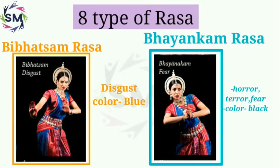The fifth is Vibhatsa Rasa. Its meaning is disgust — if an ugly or disgusting thing is shown, the audience feels nausea. Like when something ugly or disgusting is shown in any art — like showing someone's horrible face — then after seeing that, the reader or audience feels a kind of disgust. The Rasa theory has completed its work because that thing is being evoked in the heart of the audience.